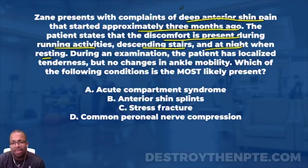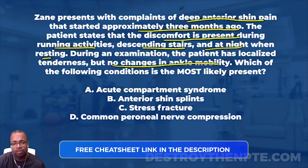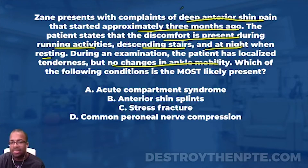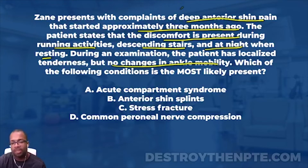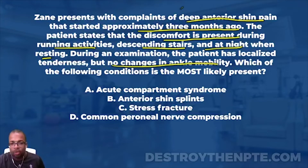This question has given me a lot to go off of. The last sentence asks which of the following conditions is most likely present - so this is a differential diagnosis evaluation question. For those on the podcast, the answer choices again: A is acute compartment syndrome, B is anterior shin splints, C is stress fracture, D is common peroneal nerve compression. Let's knock these out one by one.